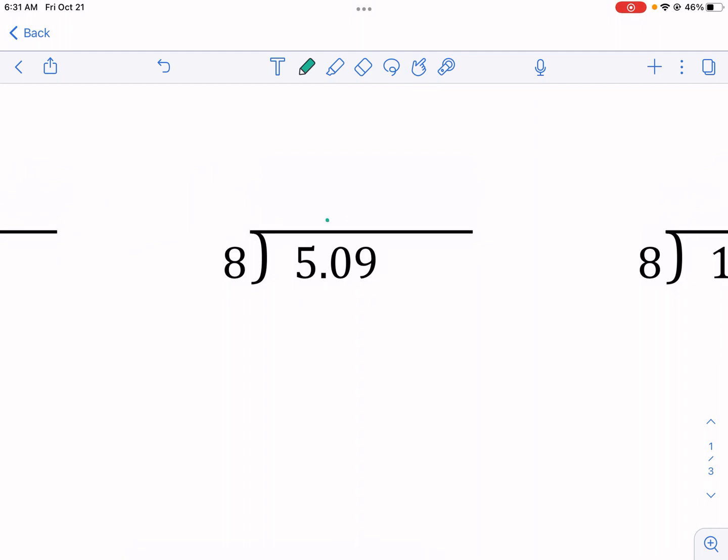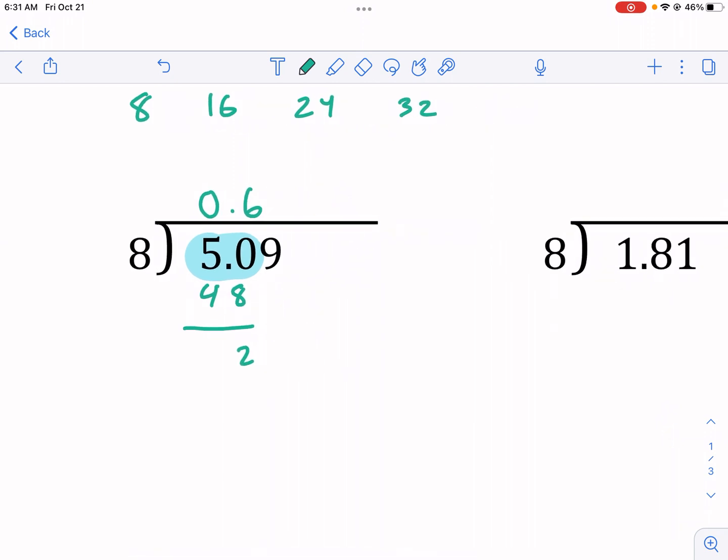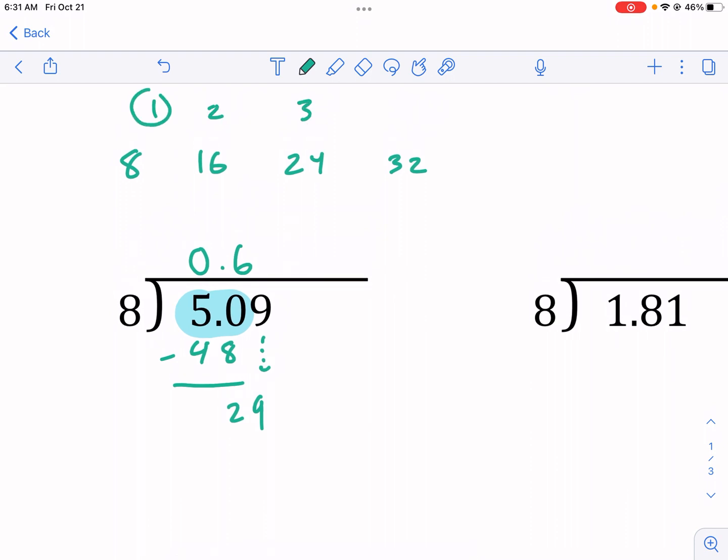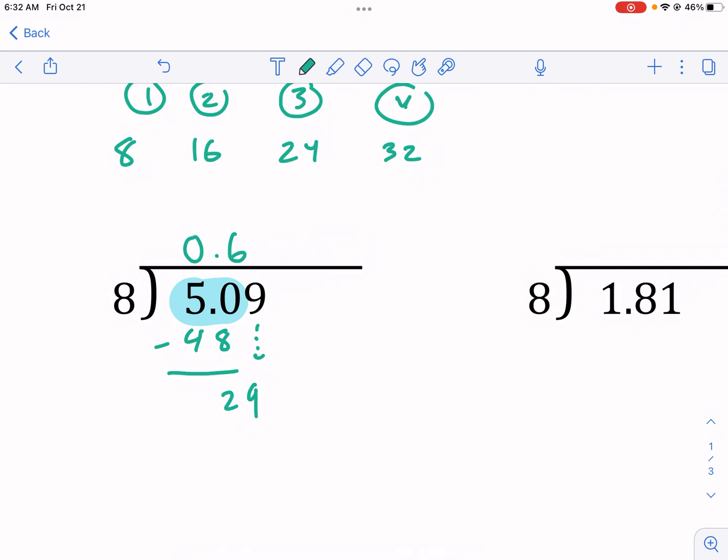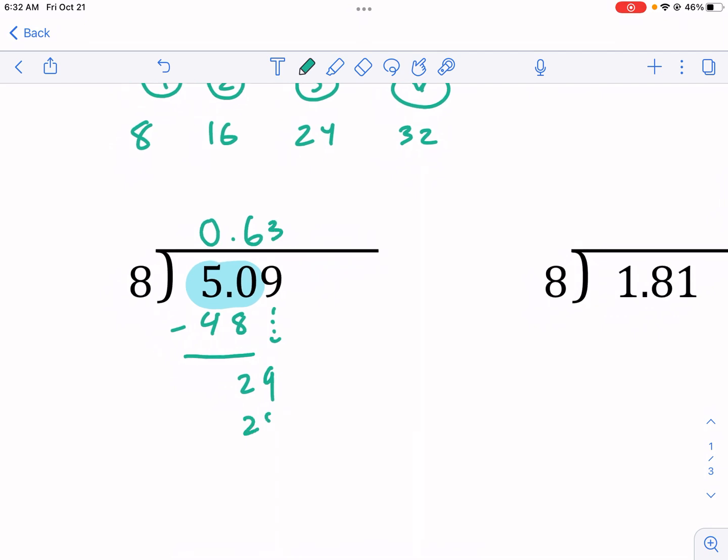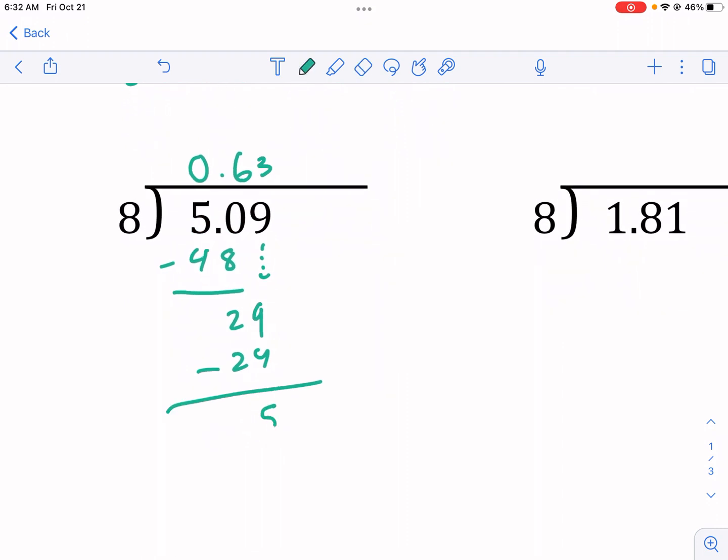So, again, plop our decimal down. 8 does not go into 5, so I need to consider the first two digits together. I put the 0 there first because it goes in 0 times. Now, 8 goes into 50. I know it goes in 6 times, and that's 48. Again, if you want, maybe write your multiples of 8. That might help you, but I'm just going to use my background knowledge. So, I have 50 minus 48. That's 2. I'm going to drop down the 9, and now I have 29. Well, it looks like it goes in 3 times, and this is 4. It goes in 3 times, and that is 24 after I multiply that 3 times that 8. I'm going to subtract here. 29 minus 24 is 5.